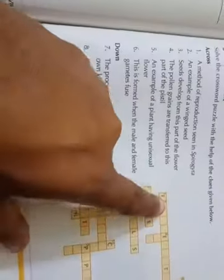Then number seven, the process of producing more of one's own kind. It will be reproduction. Number seven down, R-E-P-R-O-D-U-C-T-I-O-N, reproduction. Then the female gamete, number eight.